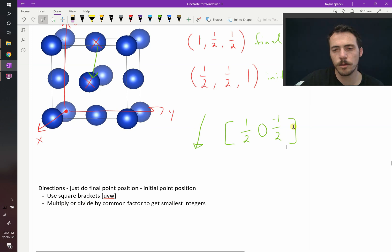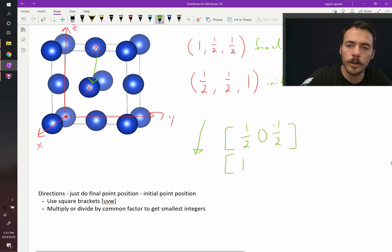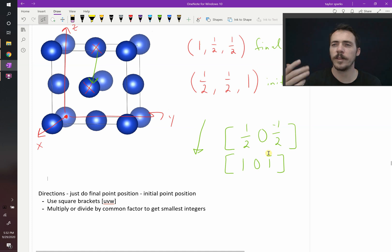Then the last thing you do is you multiply or divide by some common factor in order to get your smallest integers. So for this one, if we multiply it all by 2, then we will end up with 1, 0, 1 bar. What is that bar I just did? Why did I write the negative on top of it? That's just convention. It's common to write the negative on top of the number. But it's the same as saying negative 1. So 1, 0, 1 bar.